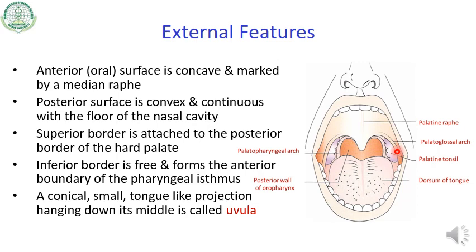A conical small tongue-like projection hangs down from the middle portion of the soft palate — you can see this is that conical small tongue-like projection. It is called the uvula.